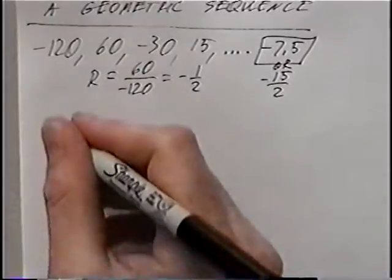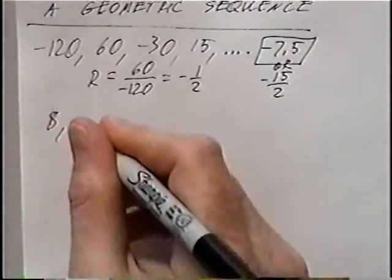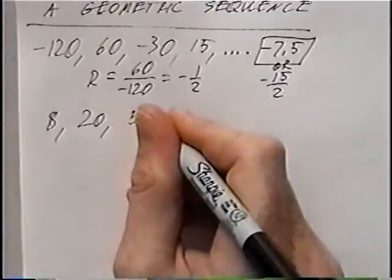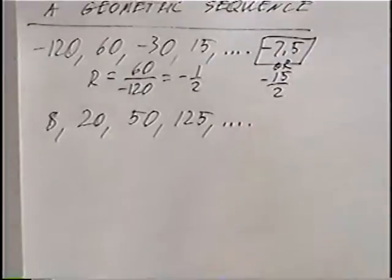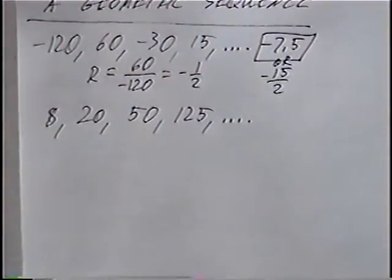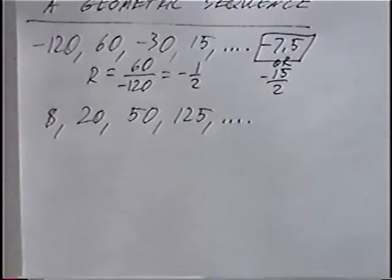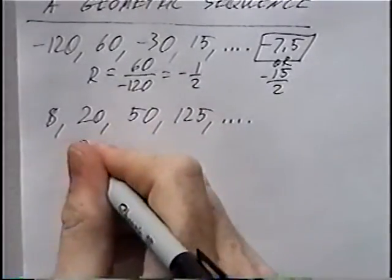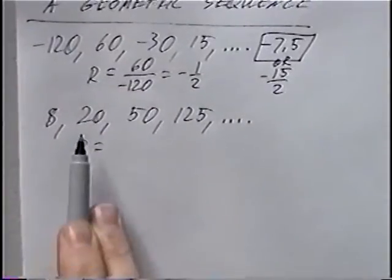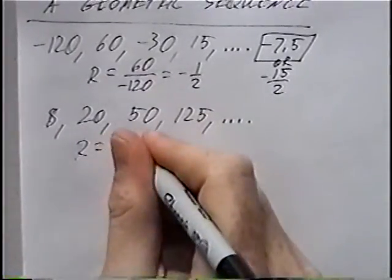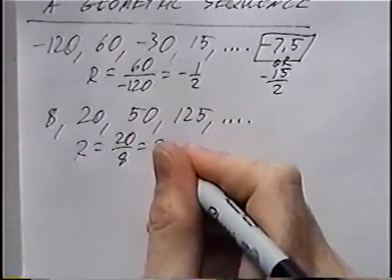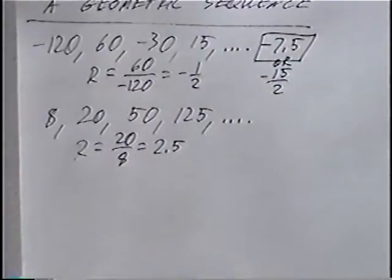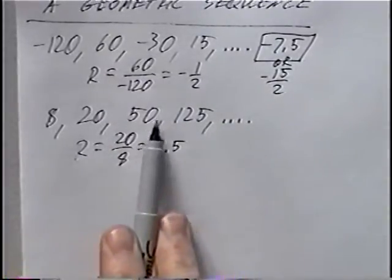The next sequence is 8, 20, 50, 125, dot dot dot. To find the next number, we again find r. Taking the second number divided by the first: 20 over 8, which as a decimal is 2.5. So each number is being multiplied by 2.5.